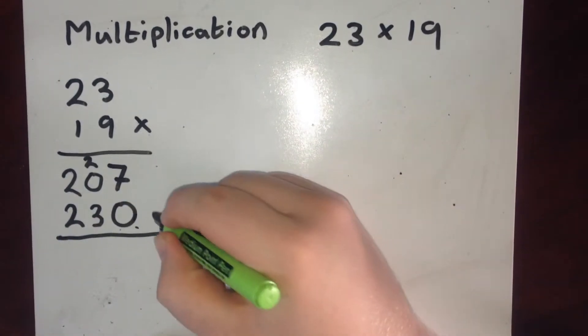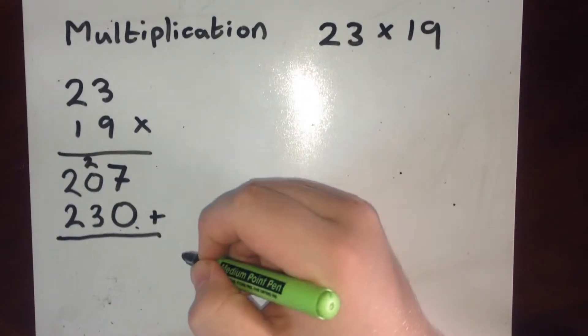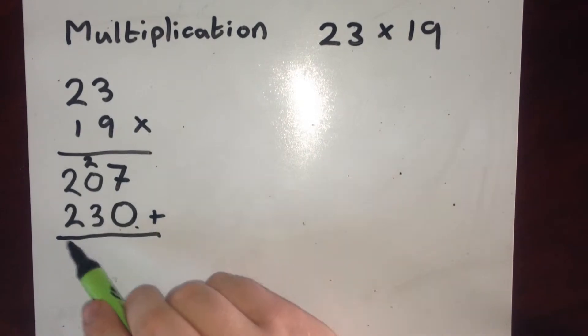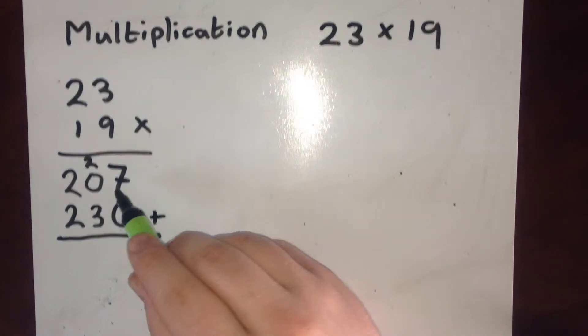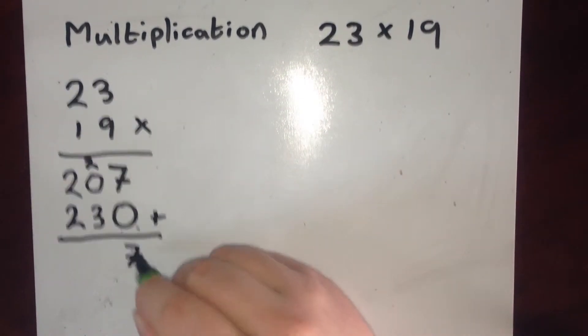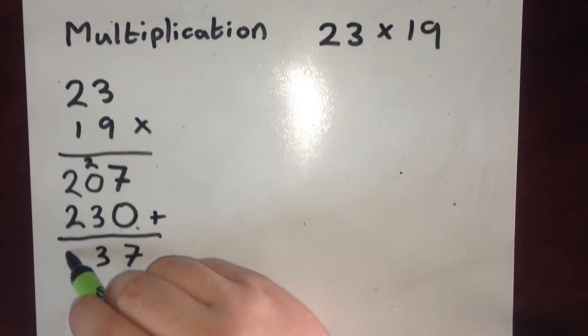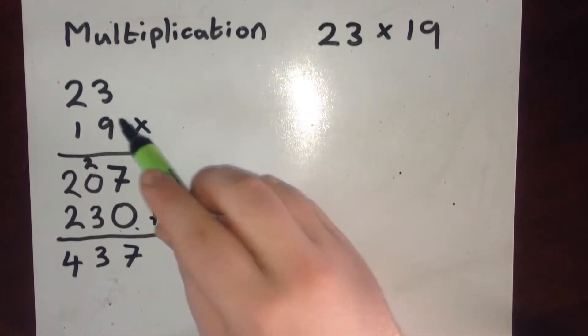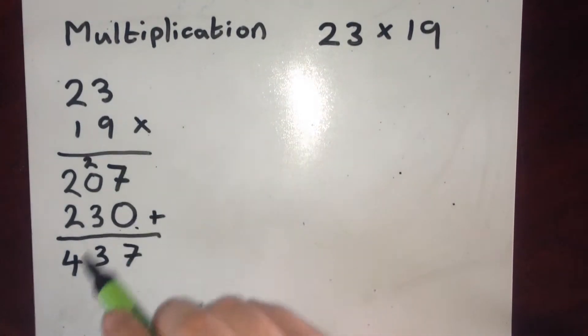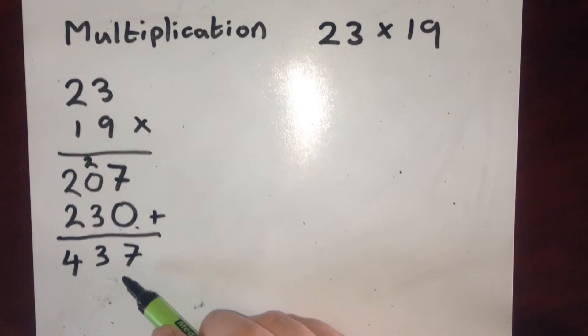Next step is to add these together. So I'm doing 207 add 230. So 7 plus the 0 is 7. 0 plus the 3 is 3. 2 plus the 2 is 4. So my answer to 23 multiplied by 19 is 437.